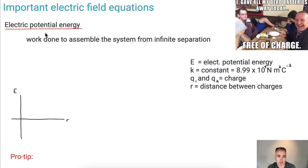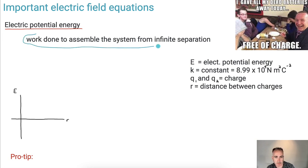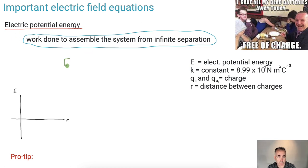Electric fields and gravitational fields, at least the equations, look very, very similar, so we can actually treat them in a similar way. For example, if we look at electric potential energy, just like gravity, we said it was the work done to assemble it from infinite separation. So it is for electric. The equation is on our data booklet: EP equals K times Q1 times Q2 over R.